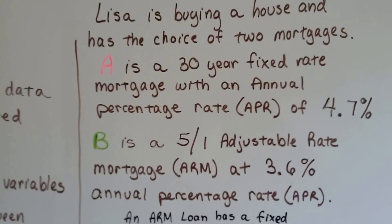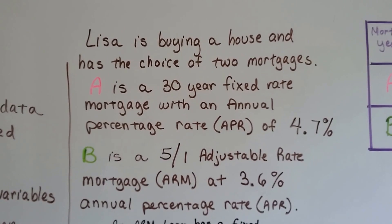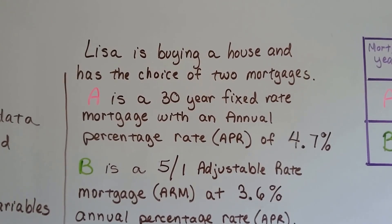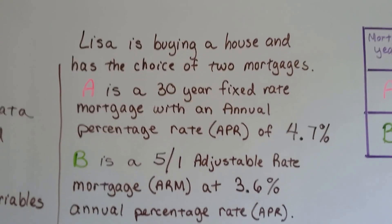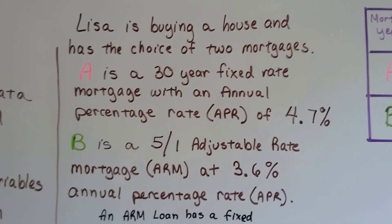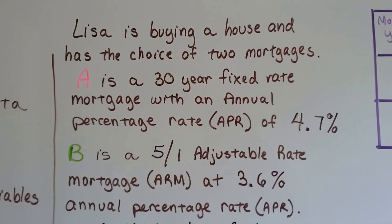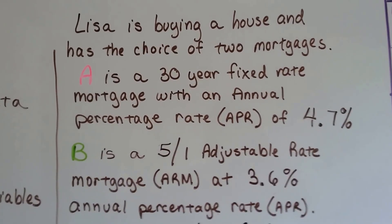So Lisa's buying a house and has a choice of two mortgages. A is a 30-year fixed rate mortgage with an annual percentage rate of 4.7%, and B is a 5/1 Adjustable Rate Mortgage (ARM) at 3.6% annual percentage rate.